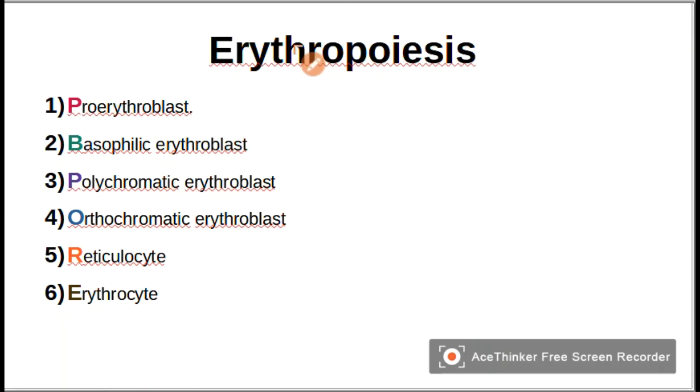The first one is proerythroblast. It is large in size with large nucleus and small amount of cytoplasm. It stains blue.